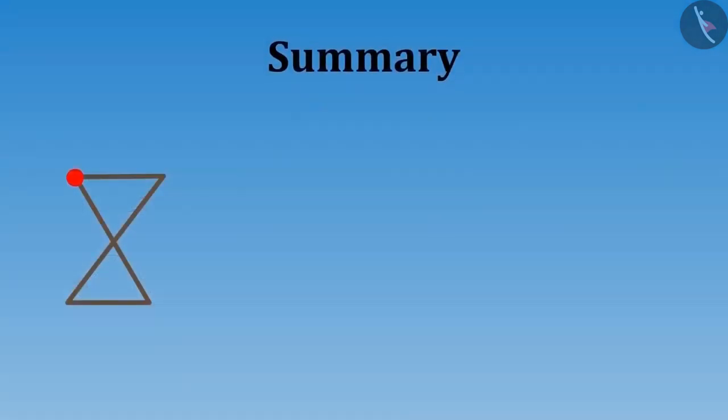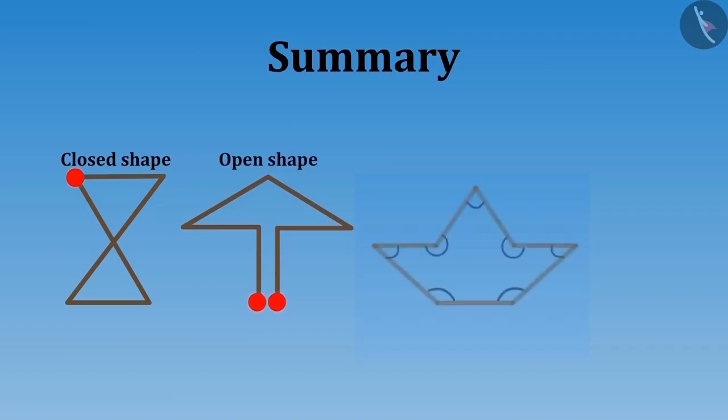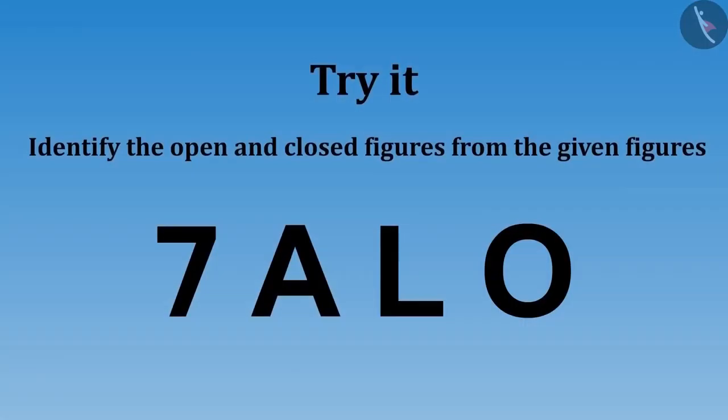In this video, we have learned that if the starting point and the end point of a shape are the same, then it is known as a closed shape. And if the starting point and the ending point of a shape are different, then it is known as an open shape. We also saw an example of making a new shape by changing the angles of the shape.